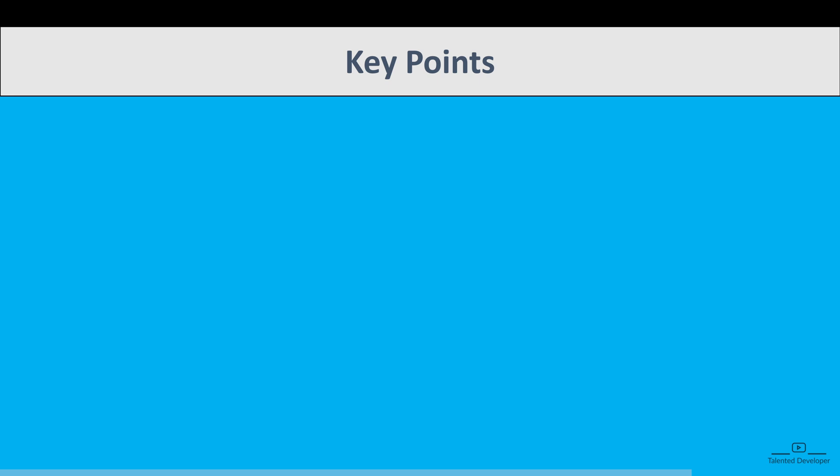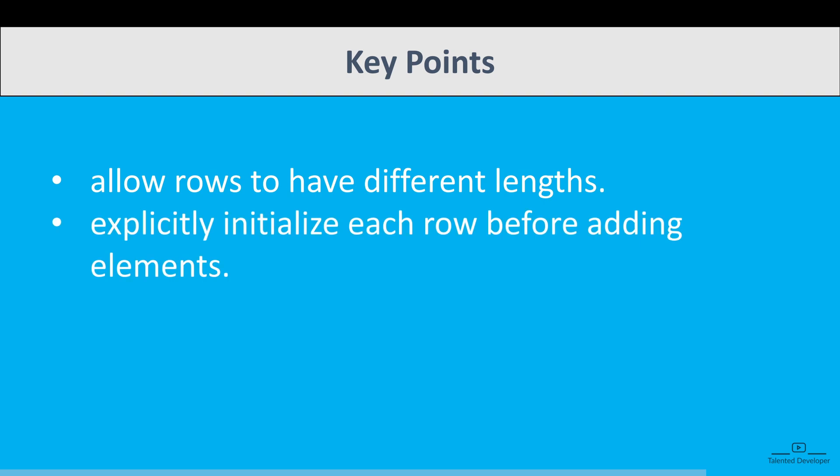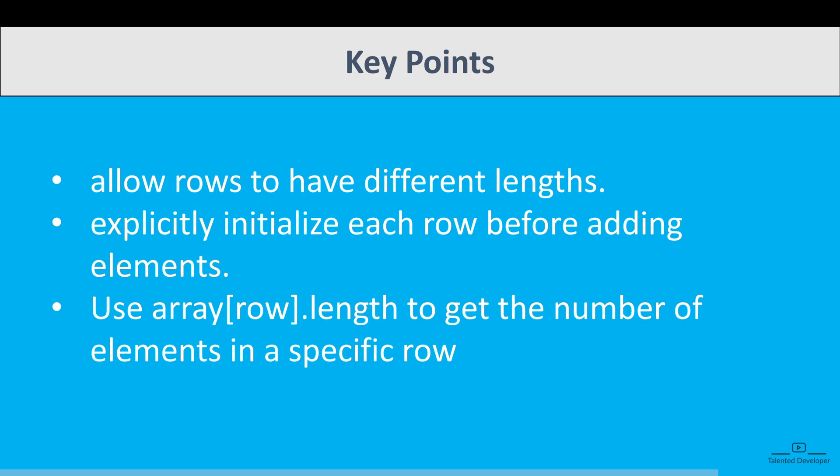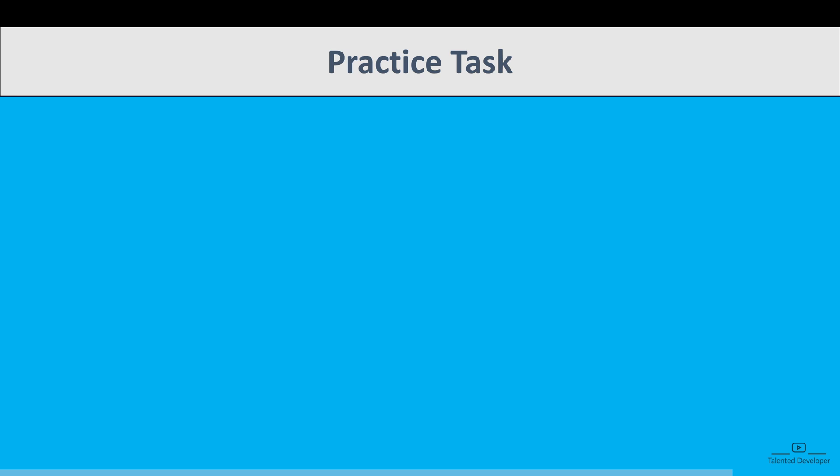Some key points you have to remember: jagged arrays allow rows to have different lengths. You need to explicitly initialize each row before adding elements, and use row.length to get the number of elements in a specific row. I'm giving one simple program: write a program to calculate the sum of all elements in a jagged array.